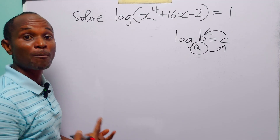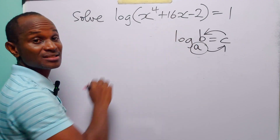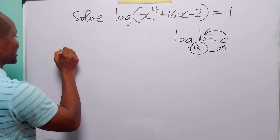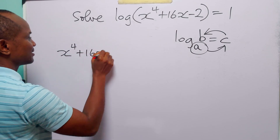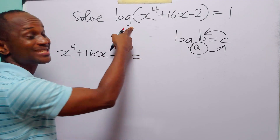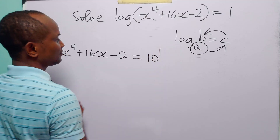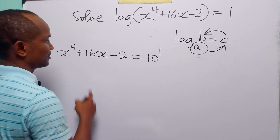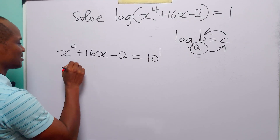According to this, we can write this logarithmic equation as x to the power 4 plus 16x minus 2 is equal to 10 to the power 1. Of course, 10 raised to the power 1 is equal to 10. Rearranging this equation, we have x to the power 4 plus 16x minus 2.